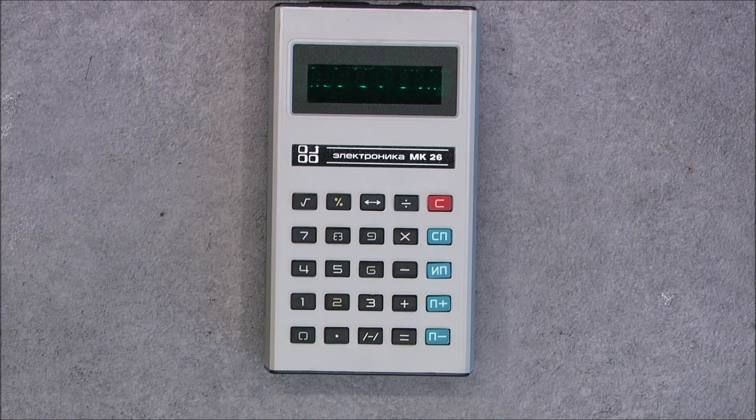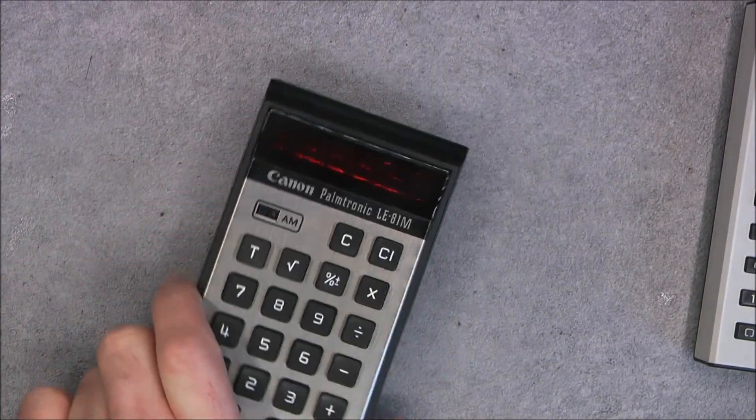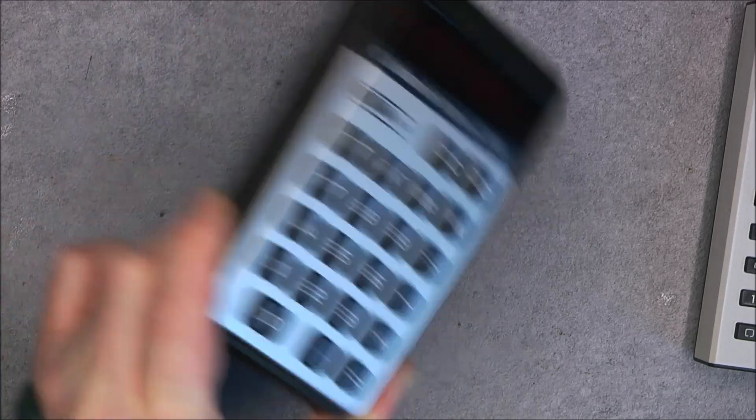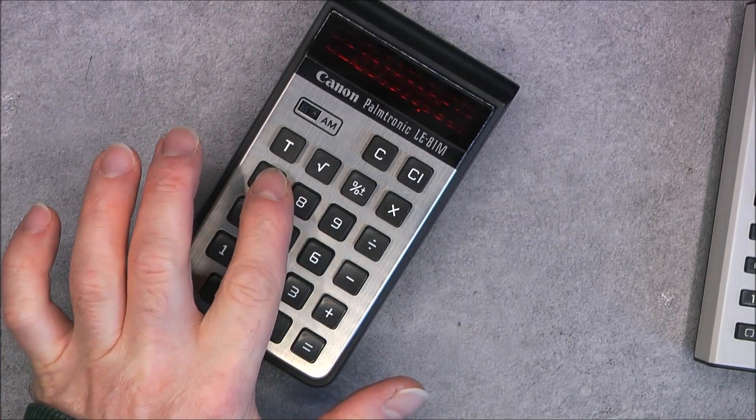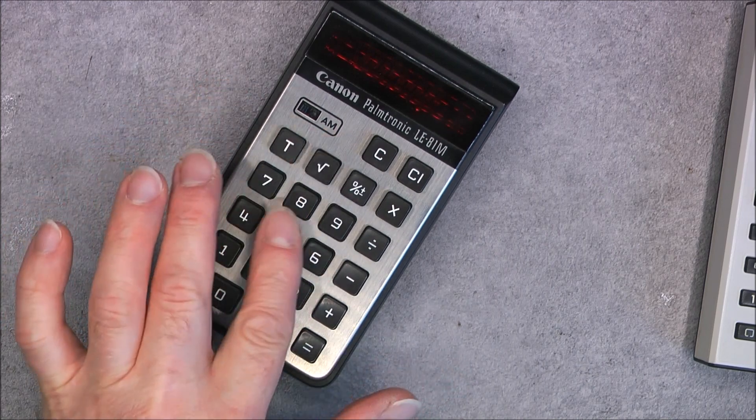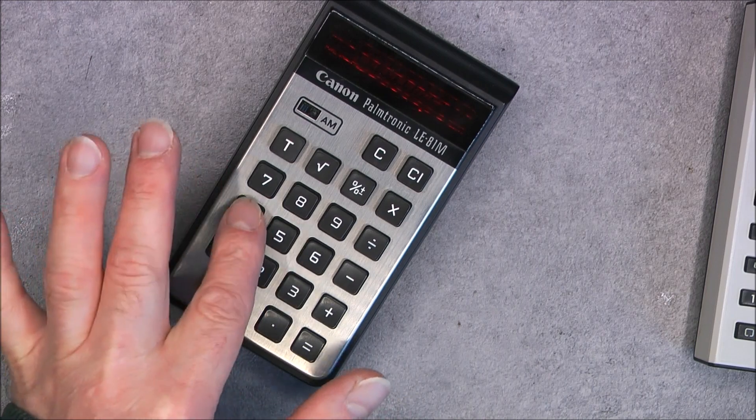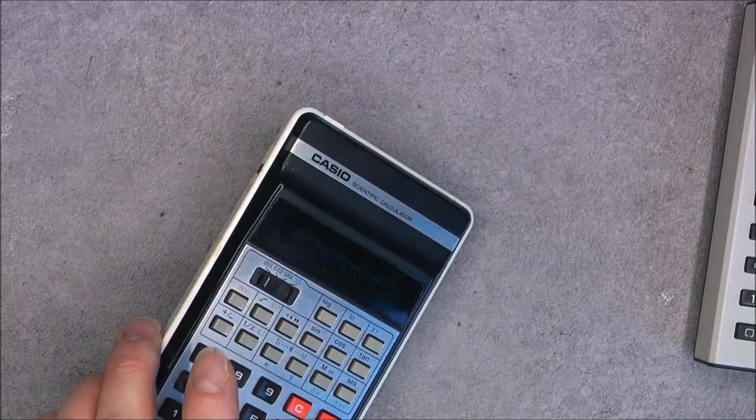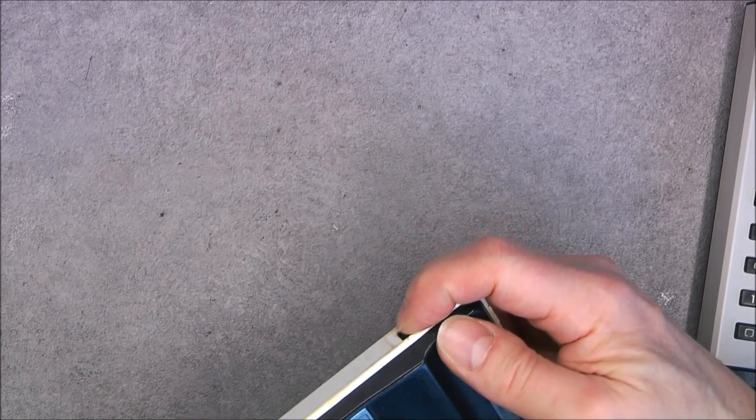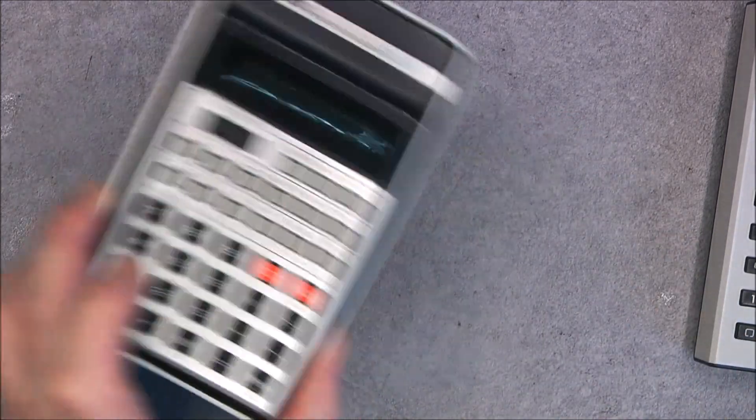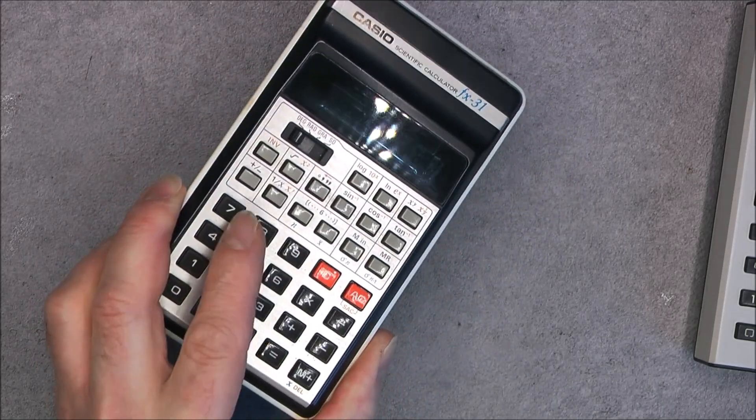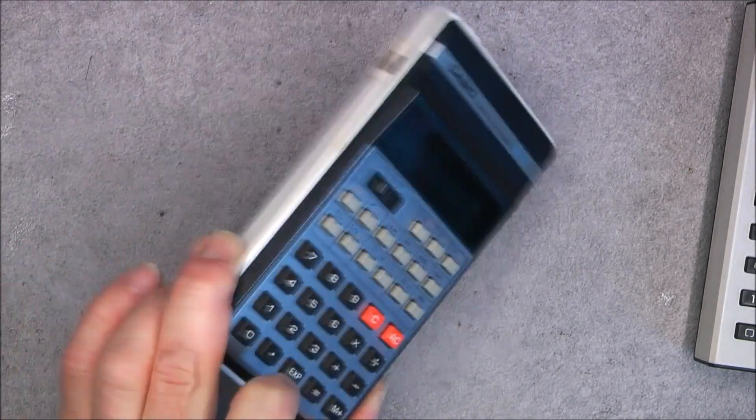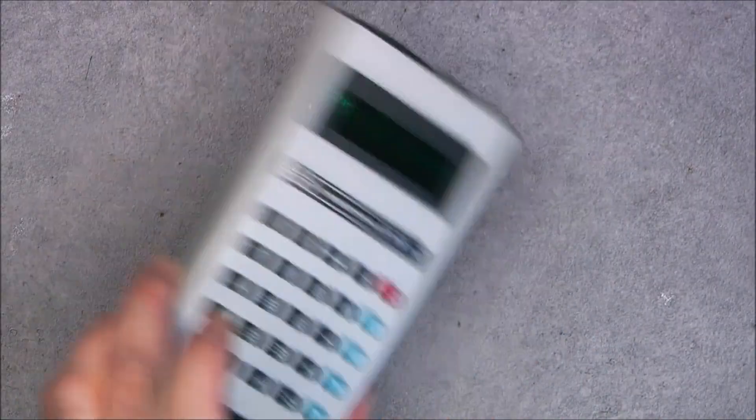And we will compare with other ones from Japan. Here we have Canon Palmtronic LE-101. If I shake it, no noise at all. The keys are well secured in here. Not very comfortable, but they are not making any noise. And another one here, a very common Casio. This one, just a little bit of noise. The keys are moving a little bit. It is a little bit noisy, but nothing compared to this one.